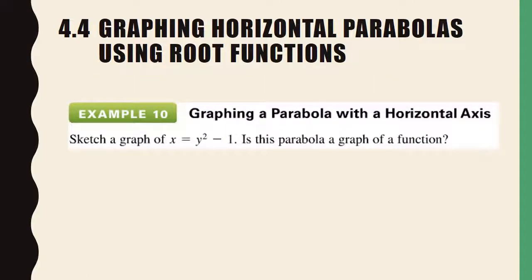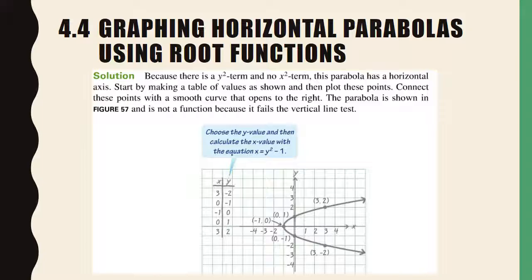We're also going to use this to graph horizontal parabolas, as we did when we talked about conic sections. Sketch a graph of x equals y squared minus 1 — is this graph a function? You need to solve for y, and it's going to be much like what we did for the circle. You'll have a positive and a negative, so again like the circle, you're going to be graphing two equations. The parabola is not a function because it fails the vertical line test.